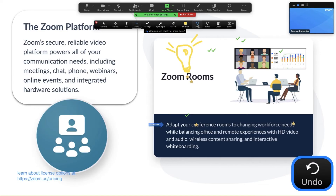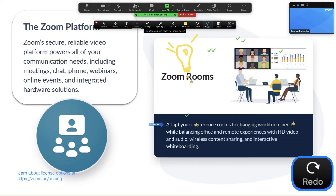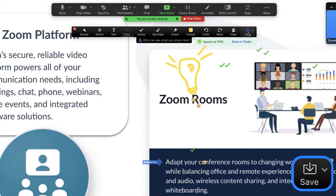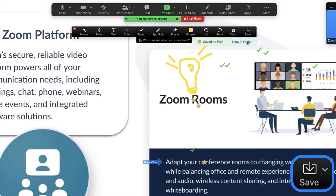Undo: undo your latest annotation. Redo. Save: if enabled, save the current view of the shared screen or whiteboard as a PNG or PDF locally on your machine. By default, it will save to your Zoom folder under documents.